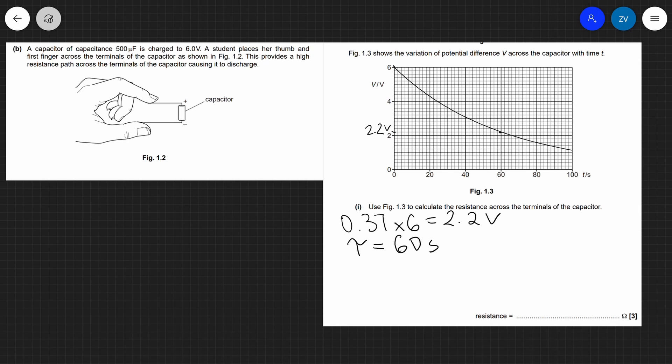Now all we need to do is use the equation that our time constant equals CR and then we can just rearrange for the resistance. So the resistance will be our time constant divided by the capacitance, which will be 60 divided by 500 multiplied by 10 to the power of minus 6. And if we put this into a scientific calculator, what we're going to get is 1.2 multiplied by 10 to the 5 ohms.